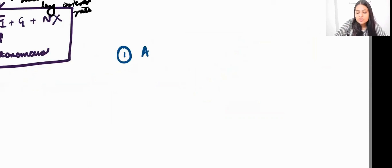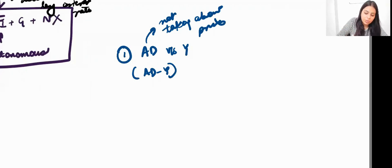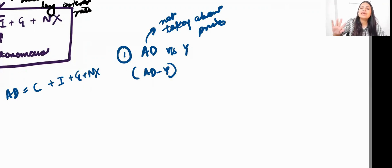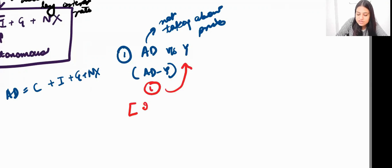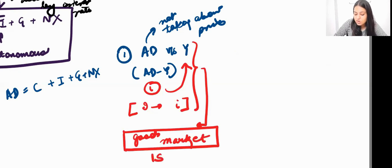Previously we drew AD versus Y in the AD-Y space, and this AD was not talking about prices at all — it was simply AD equals C plus I plus G plus NX, with no money market. Now I want to bring interest rates into this picture and see what happens to investment when interest rate changes. From here I want to derive the equilibrium of the goods market, and this will help me derive something known as the IS curve.